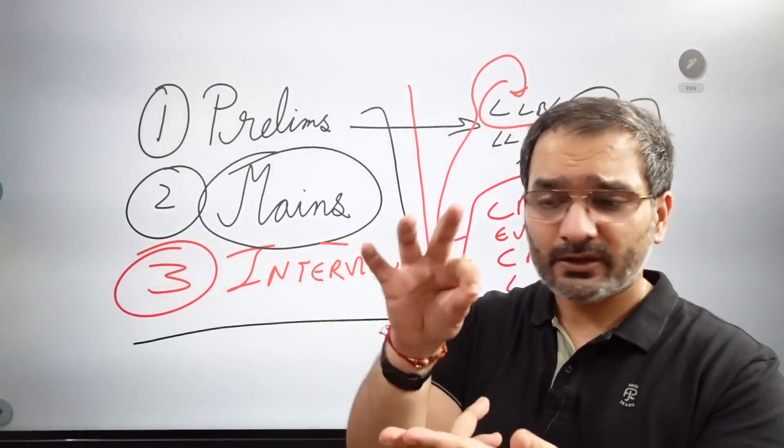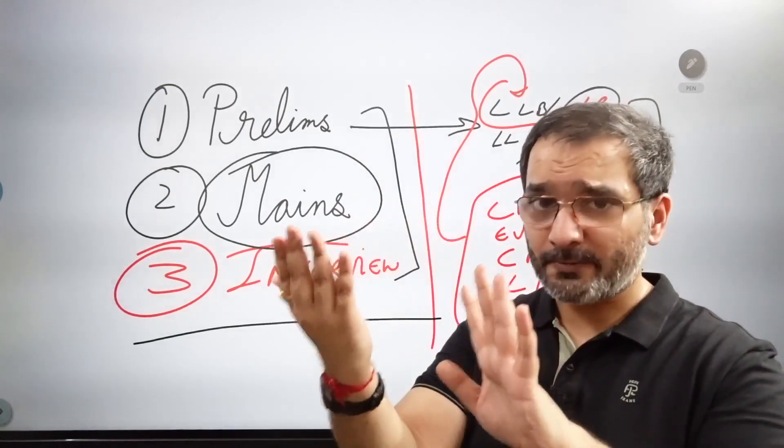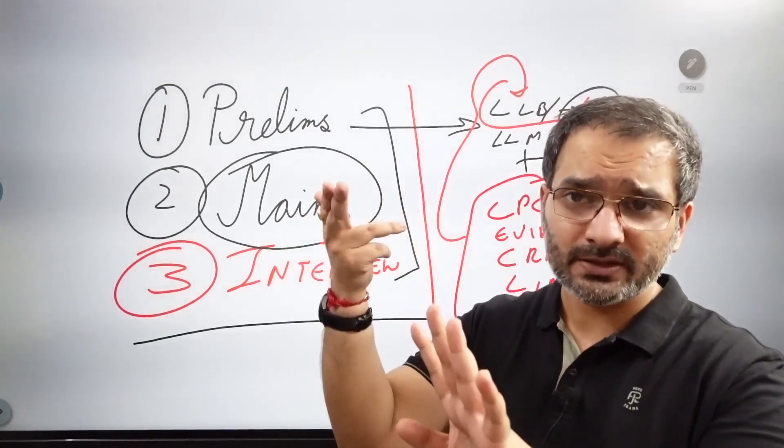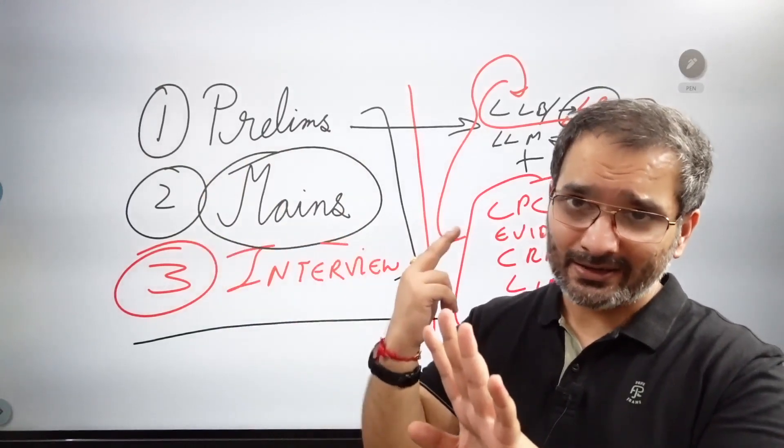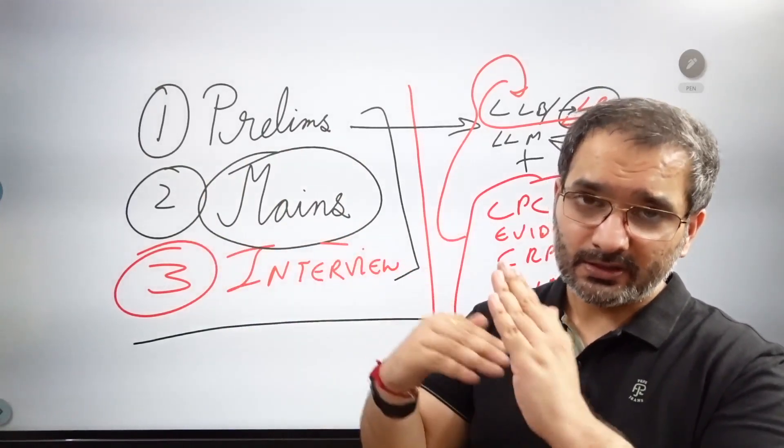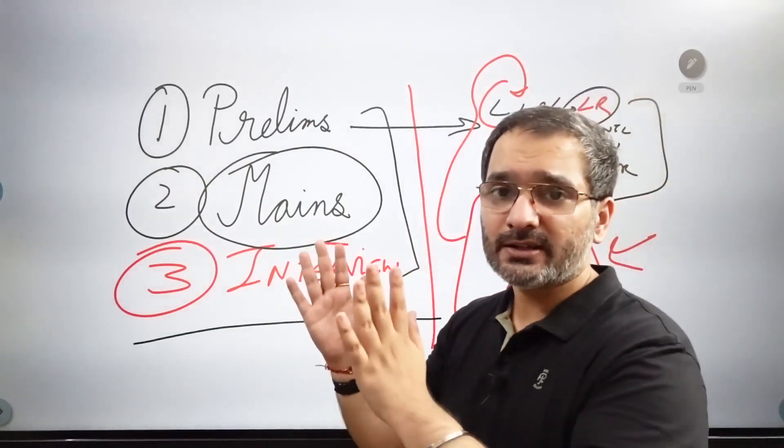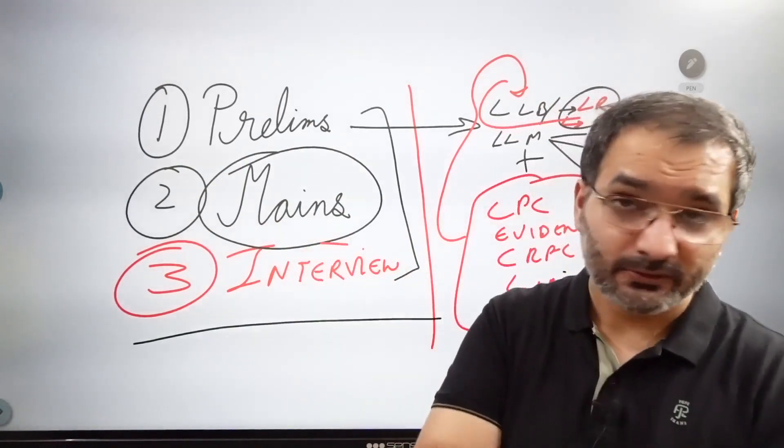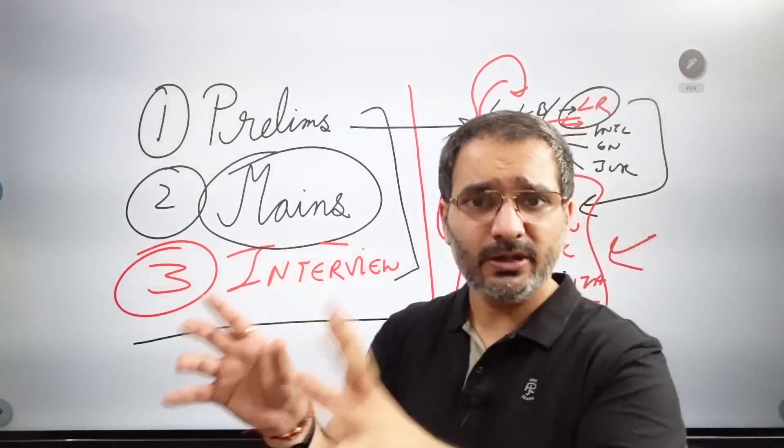You know this is the core fundas you need to know. So the core funda then another associated funda is theft, criminal misappropriation, criminal breach of trust, three related topics because misappropriation and breach of trust cover those scenarios that are not covered in theft but they are interrelated because it is all about the possession and the consent. Breach of trust for example you are entrusted with the property so those key words from the sections you need to remember.